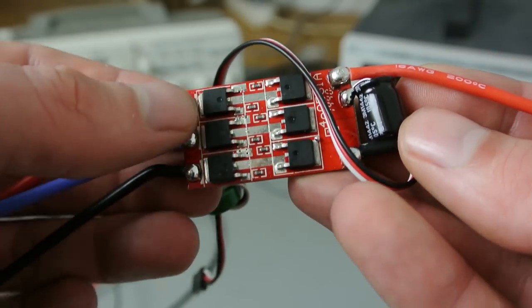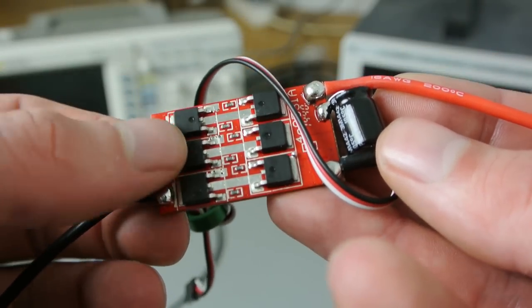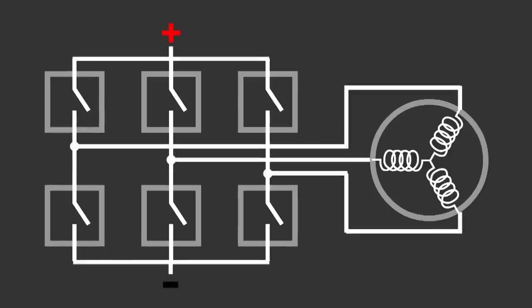It's actually quite simple once you know it. The six big components you see on the back of the ESC are N-channel MOSFETs. You can think about them as switches you can control with a microcontroller. They are connected to the motor in such a way that you can run the current in any direction you want through the motor coils.